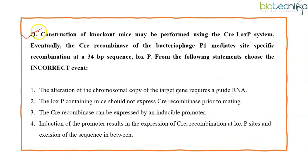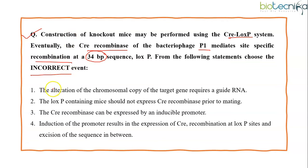Another type of question is statement-based, from a previous year CSIR NET Life Science Part C paper. Construction of knockout mice may be performed using the CRE-LOX-P system. CRE recombinase of bacteriophage P1 mediates site-specific recombination at the 34 base pair LOX-P sequence. Choose the incorrect statement from the following: statement one says alteration of chromosomal copy of target gene requires a guide RNA — recall that in CRE-LOX-P system, we need to check whether guide RNA is used.